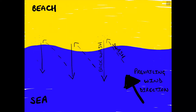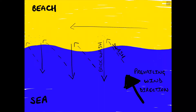In this particular example, we have a direction of longshore drift moving from east to west, transporting sediment along the beach in a westerly direction.